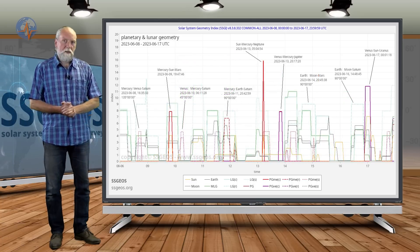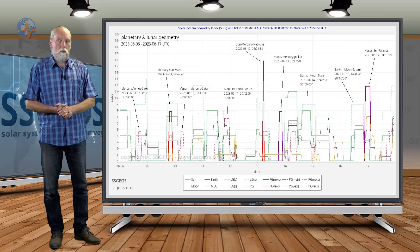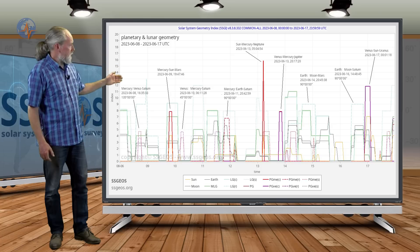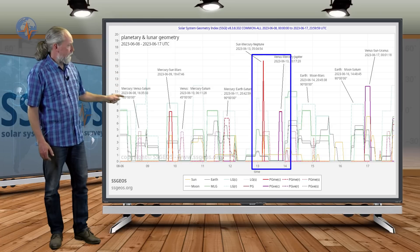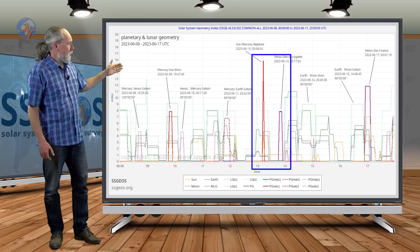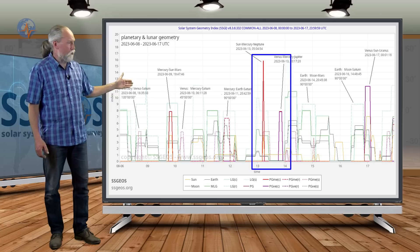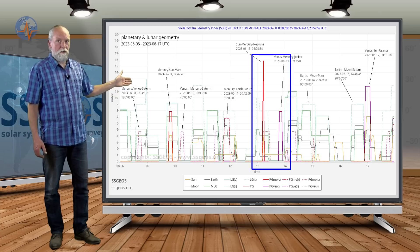In the previous update I explained the convergence of conjunctions tomorrow on the 13th. Here we see the high red peak and a purple peak following that red peak. First we have Sun, Mercury and Neptune in conjunction, that will be tomorrow morning. That's going to be a critical one.